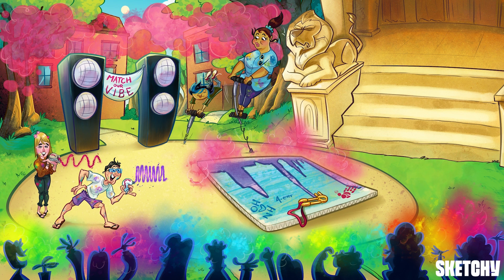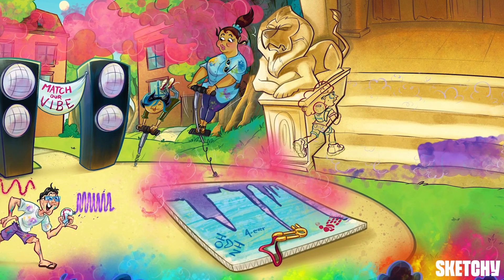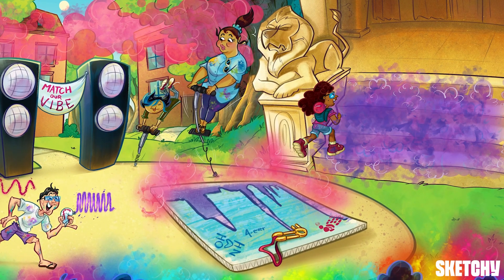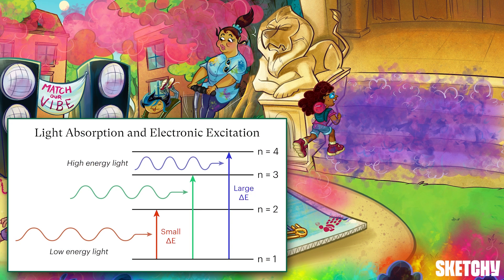Let's head to the library to check in on the students who are nobly forgoing the festivities for their GPAs — though the library might have been a color-fest casualty, with all that violet paint staining the stairs. All the better for us, since we're here to cover ultraviolet-visible, or UV-Vis, spectroscopy.